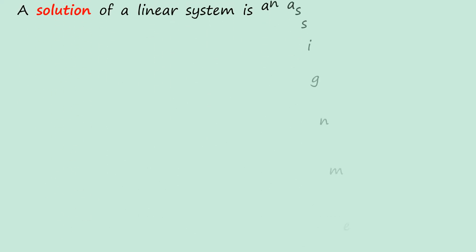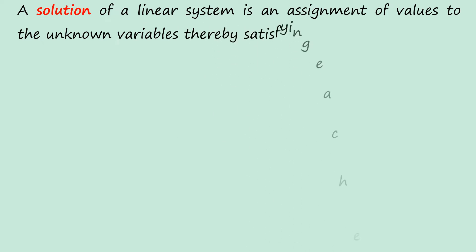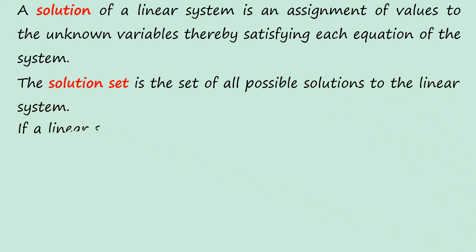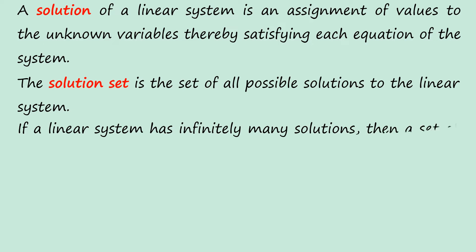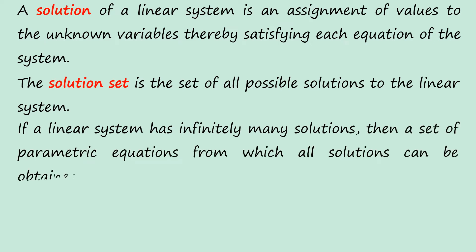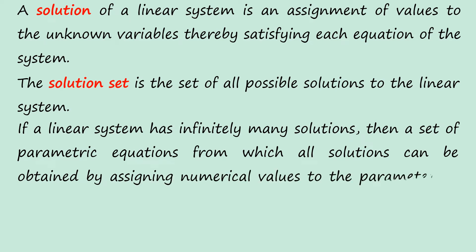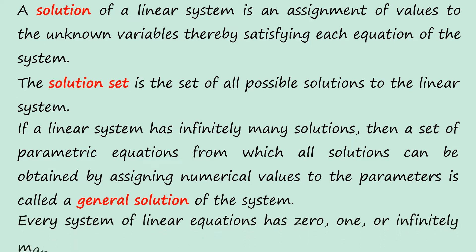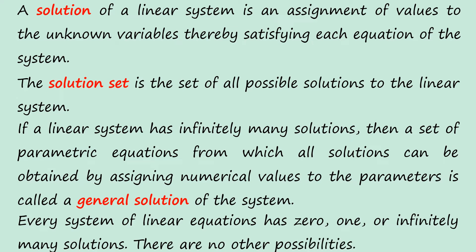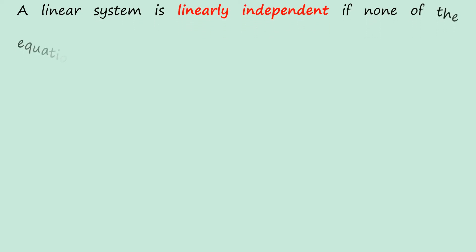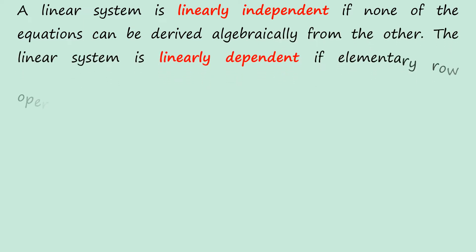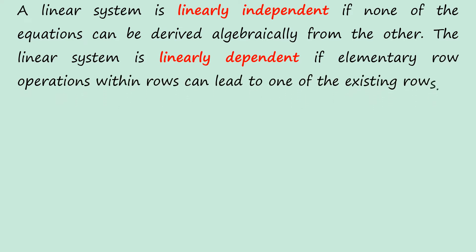A solution of a linear system is an assignment of values to the unknown variables, thereby satisfying each equation of the system. The solution set is the set of all possible solutions. If a linear system has infinitely many solutions, then the set of parametric equations from which all solutions can be obtained is called a general solution. Every system of linear equations has zero, one, or infinitely many solutions — there are no other possibilities. A linear system is linearly independent if none of the equations can be derived algebraically from the others. It is linearly dependent if elementary row operations within rows can lead to one of the existing rows.